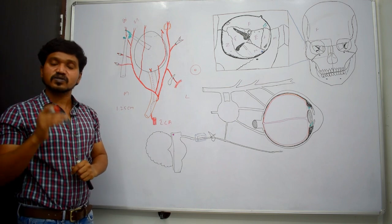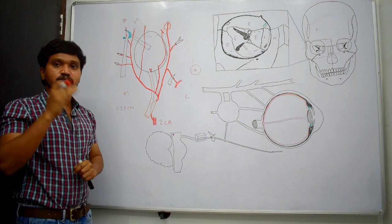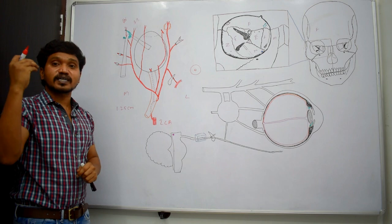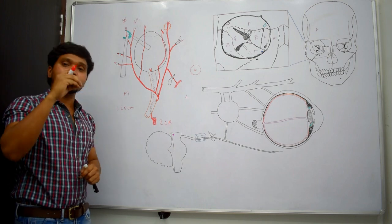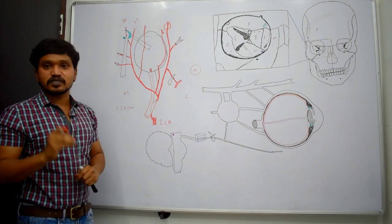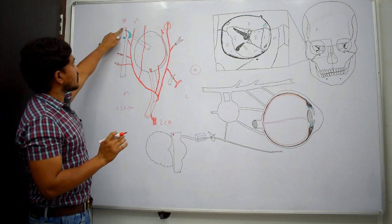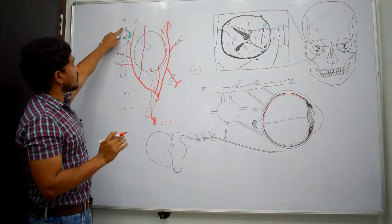The dorsal nasal artery, at the medial part of the eye, supplies the nose and terminates after anastomosing with the terminal branch of the facial artery. The ophthalmic artery also gives medial palpebral arteries, which supply the medial part of the eyelids, skin, and conjunctiva, and they anastomose with the lateral palpebral arteries.